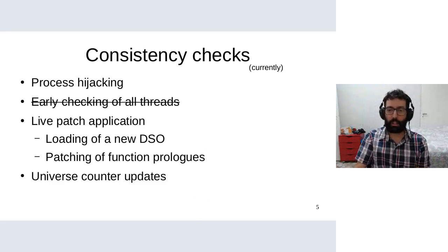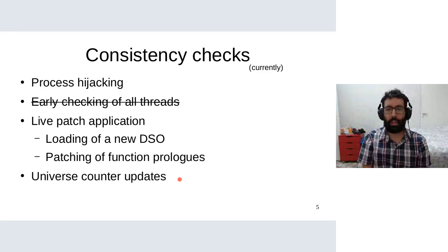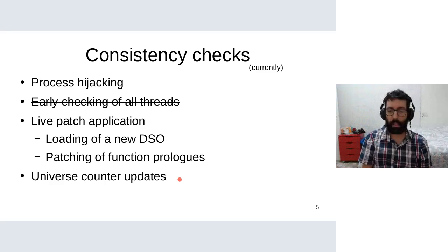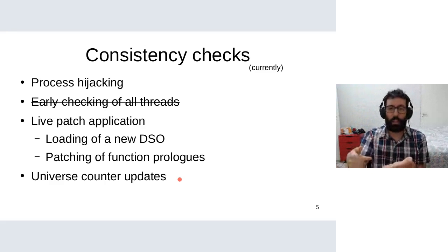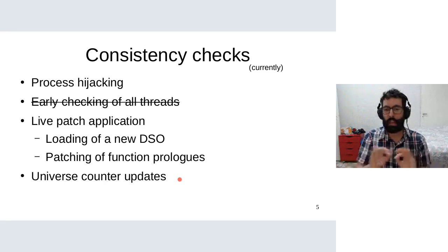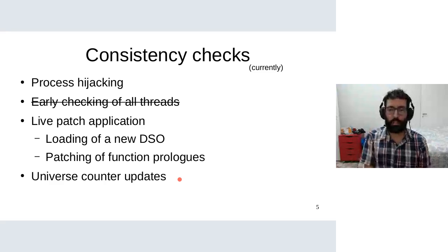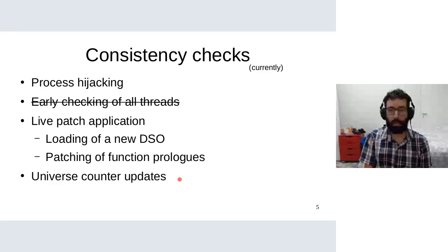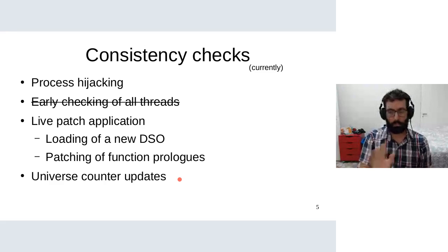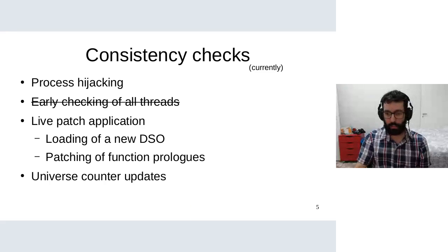Even before João left the company, he made changes based on feedback from the 2018 conference. Now there is still process hijacking, but the early per-thread safety checking is no longer done — it is skipped altogether. Live patch installation proceeds as before: a new DSO is loaded bringing replacement functions, and function prologues are patched. Additionally, it now updates universe counters, which I'll explain in the next slides.